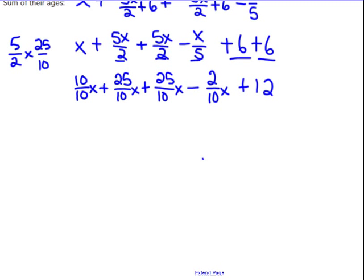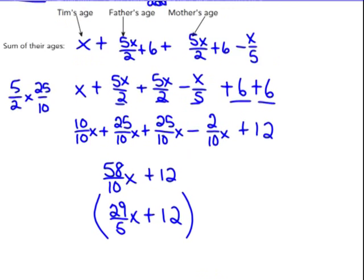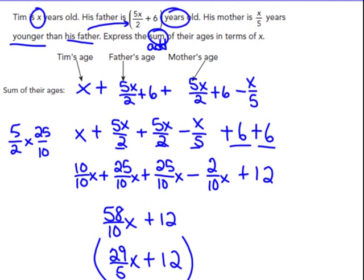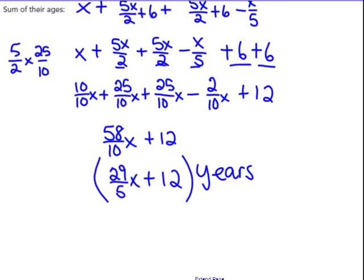So I've got 10 plus 25 plus 25 is 60, minus 2 is 58 tenths X. Let me verify: 10, plus 25 is 35, plus 25 is 60, minus 2 is 58 tenths X plus 12. Now 58 tenths — 58 and 10 have a common factor of 2 — so I'll simplify that to 29 fifths X plus 12. The sum of their ages is 29 over 5 times X plus 12, and the label is years. So the answer is (29/5 X + 12) years.